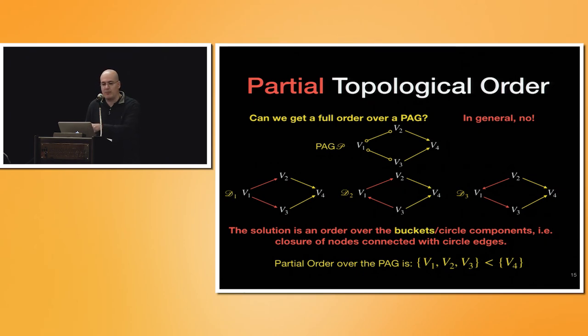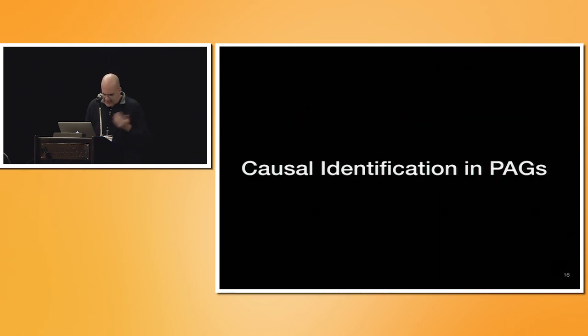And this is in the literature called circle component. V1 and V2, note that there is bubble, bubble on both sides. Then they are in the same circle component. V1 and V3 is the same circle component. We get the closure of that. Then V1, V2, and V3 will be in the same bucket. Then these guys need to be coming before V4. There is an algorithm to do that.